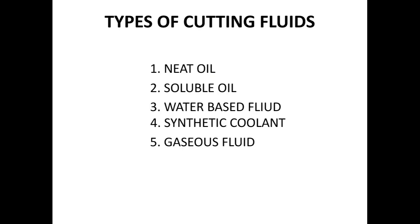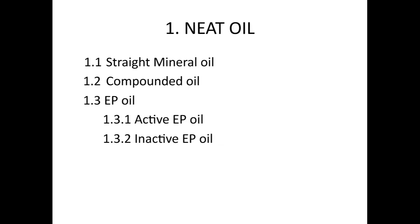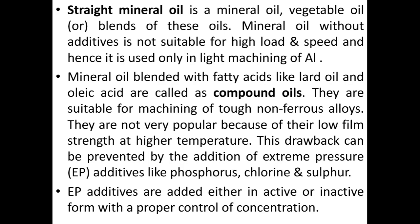Types of cutting fluids include: neat oil, soluble oil, water-based fluid, synthetic coolant, and gaseous fluid. Types of neat oil are straight mineral oil, compounded oil, extreme pressure (EP) oil — active EP oil and inactive EP oil. Straight mineral oil is a mineral oil, vegetable oil, or blends of these oils. Mineral oil without additives is not suitable for high load and speed and hence is only used in light machining of aluminum. Mineral oil blended with fatty acids like lard oil and oleic acid are called compounded oils; they are suitable for machining tough non-ferrous alloys.